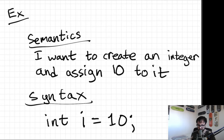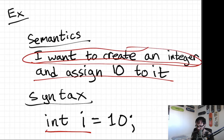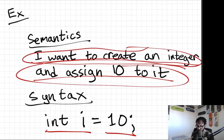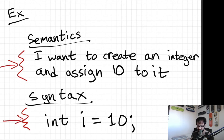Here are a couple of examples of syntax versus semantics. In this first one, I want to create an integer and assign 10 to it. So semantics is what you're thinking in your head — the intent. And syntax is the actual code the computer can read.